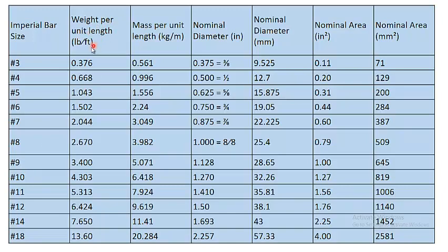The unit weight per foot — that is, the weight of a 1-foot-long bar — is 0.376 lbs, which equals 0.561 kg per meter. These are the nominal diameters: for a number 3 bar, the diameter in millimeters is 9.525, its area in square inches is 0.11, and in square millimeters is 71. In an upcoming slide I will show how to interconvert these values between inches and millimeters.